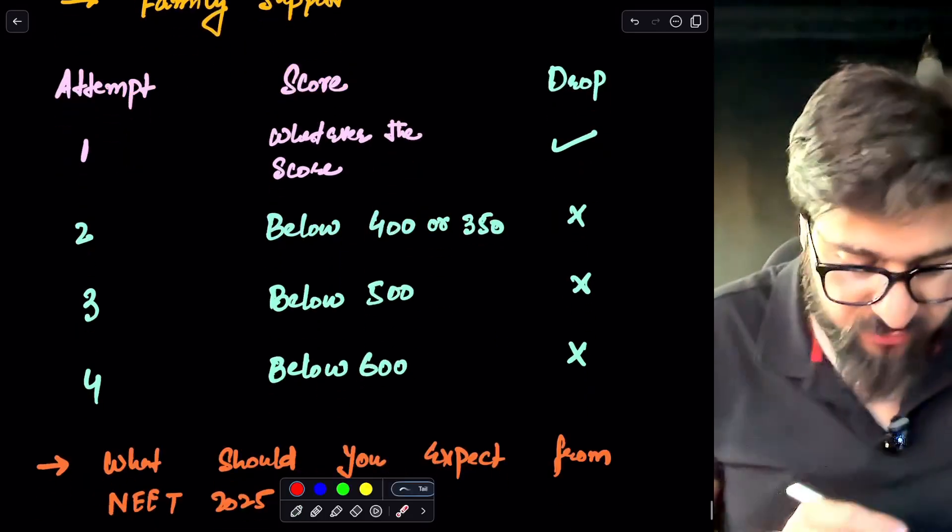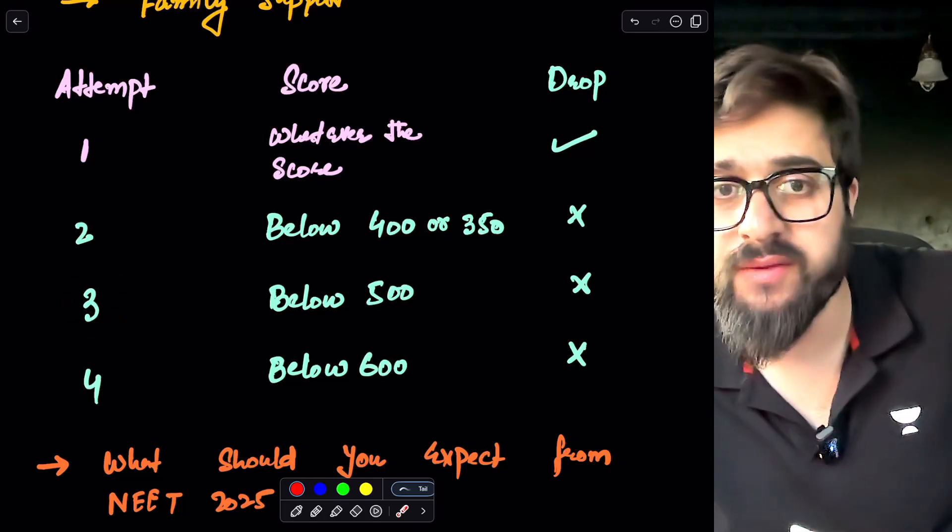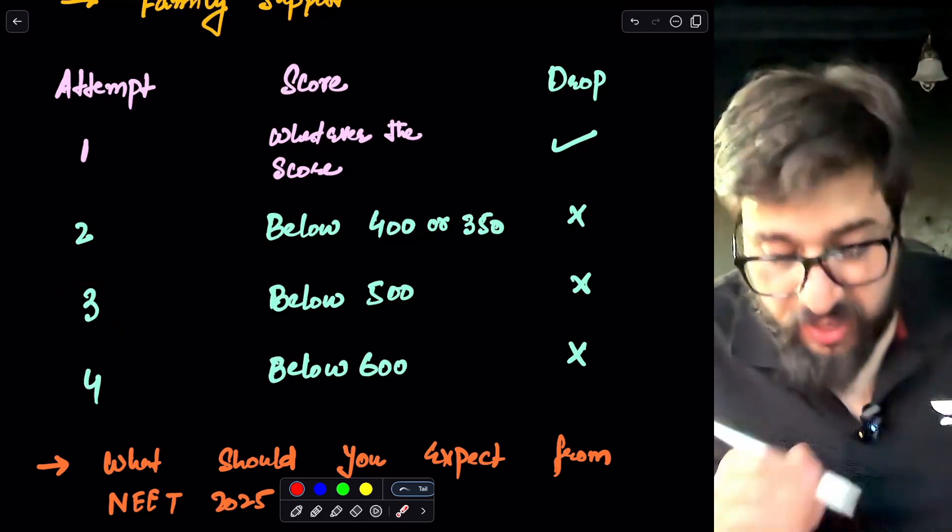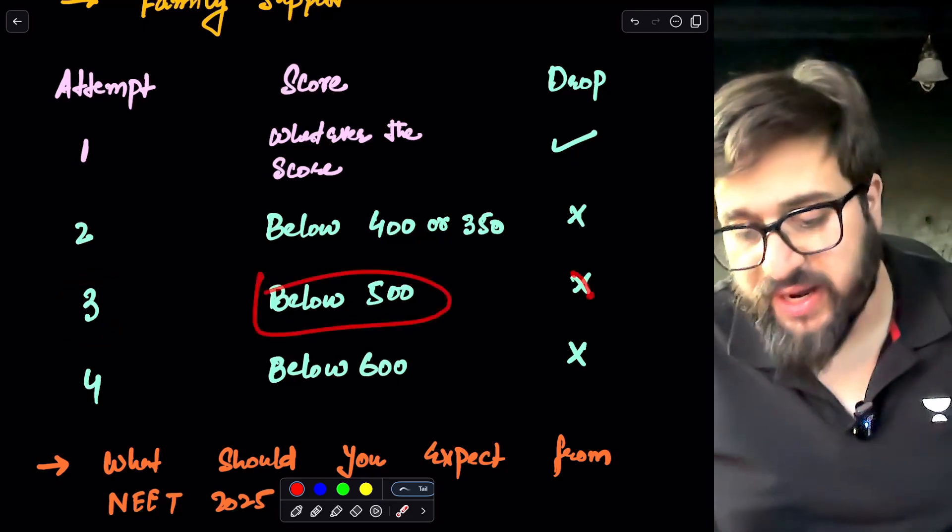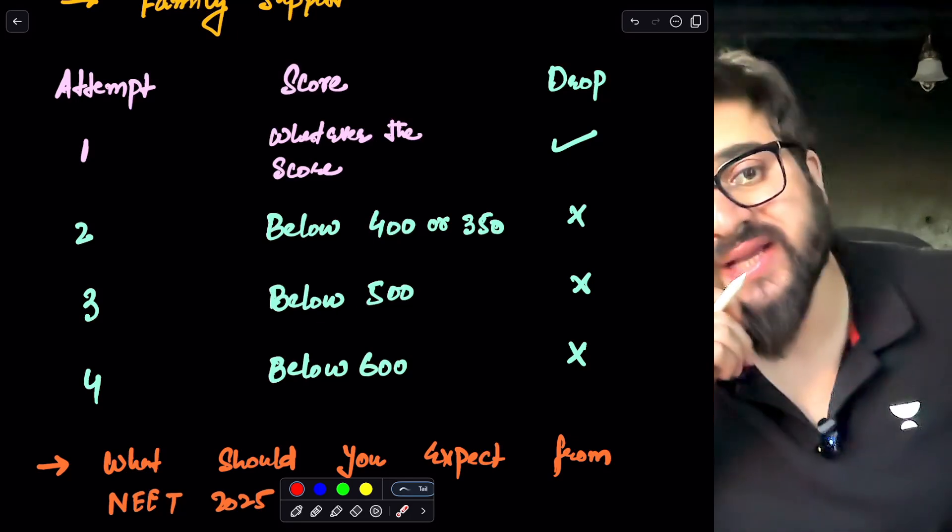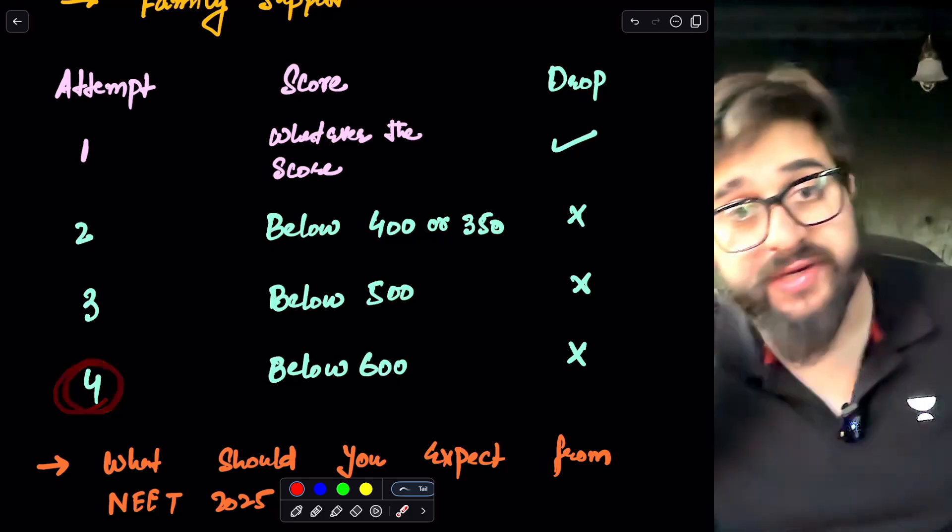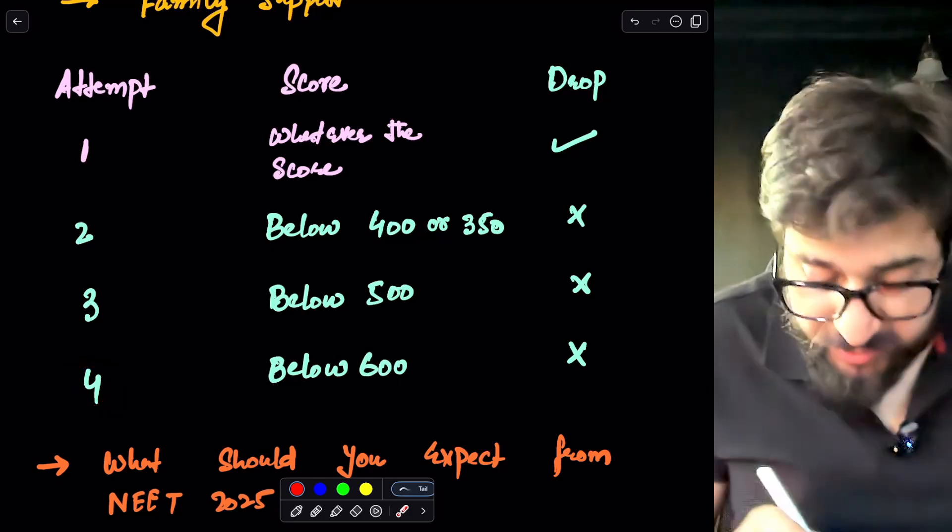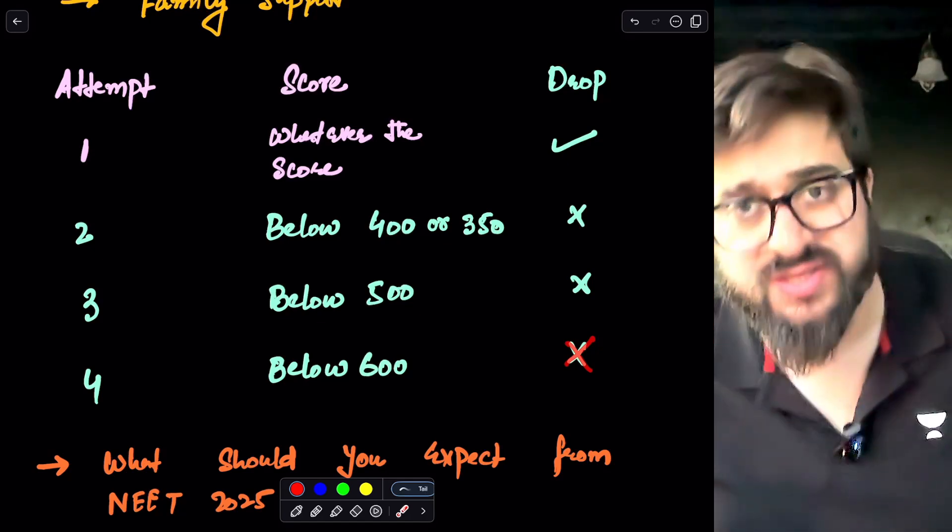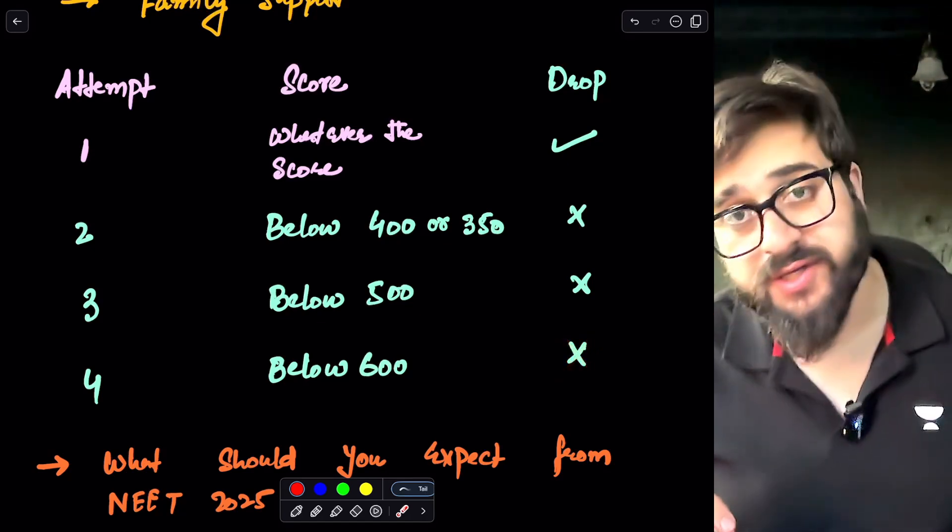And next, my dear friends, if this is your third attempt - if you have already taken the three attempts and your score is below 500, in that case also, you guys are not supposed to take the drop. And if you have already given the four attempts, but your score is below 600. In that case also, this is I am telling you honestly, in that case also you cannot take the drop.